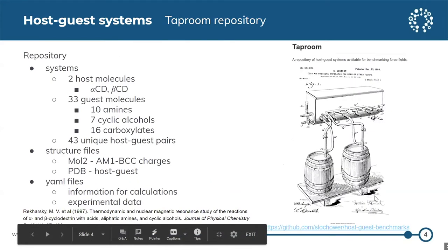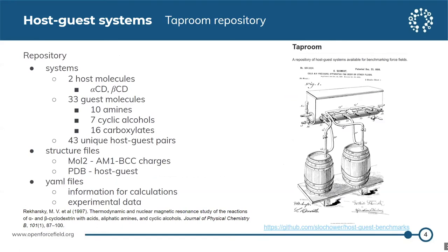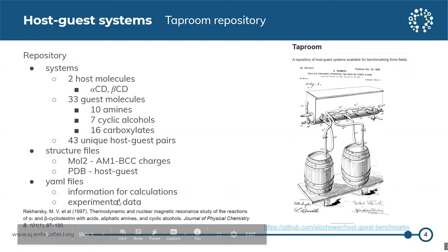The host-guest systems are stored in a repository called Taproom, which is available on GitHub. The repository contains two host molecules, alpha-cyclodextrin and beta-cyclodextrin, with 33 guest molecules — 10 of them are amines, 7 are cyclic alcohols, and 16 are carboxylates. The mol2 files contain AM1-BCC charges. There are also YAML files which contain information on how to set up the calculations, and the experimental data are obtained from the reference listed.